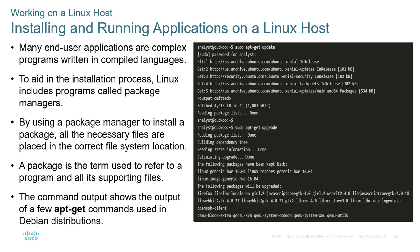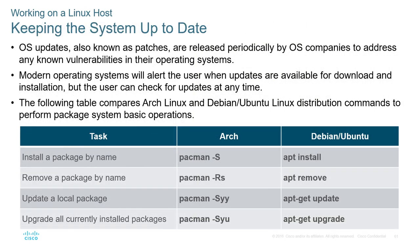Linux uses programs called Package Managers that put all content in the correct location. For Debian or Ubuntu, apt install installs a package; apt remove removes it; apt-get update updates; and apt-get upgrade upgrades. The commands depend on the architecture or distribution of Linux you're running — not all distributions are the same. For example, apt-get and apt install may not work on Red Hat.